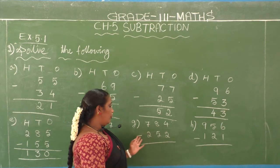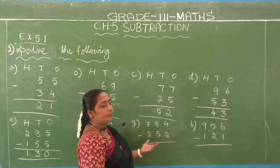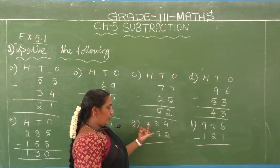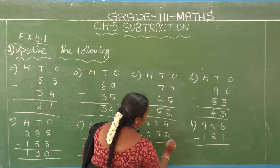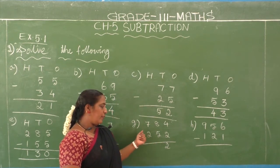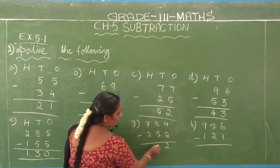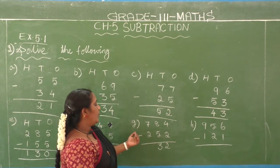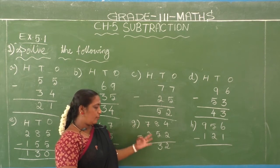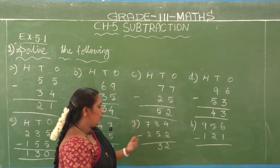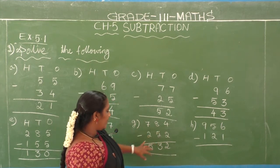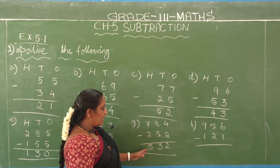G1: 784 minus 252. Ones place — second number is 2, first number is 4: 2 after 3, 4. Difference is 2. Tens place — second number is 5, first number is 8: 5 after 6, 7, 8. Difference is 3. Hundreds place — second number is 2, first number is 7: 2 after 3, 4, 5, 6, 7. Difference is 5. So 784 minus 252 equals 532.